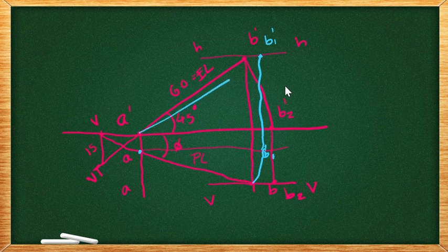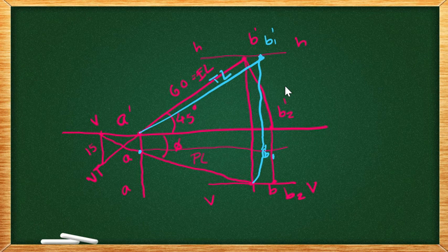Join this a dash and b1. So, we have the true length. This is the required true length.